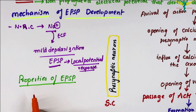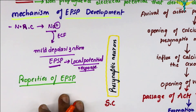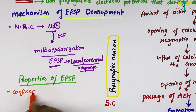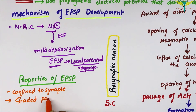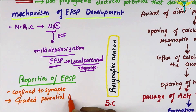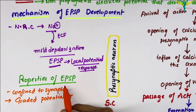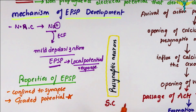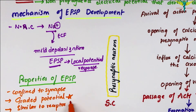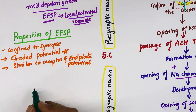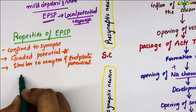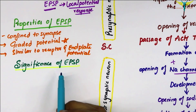The properties of the EPSP are as follows: the EPSP is only confined to the synapse, it is a graded potential — remember this point — and it is similar to the receptor potential and the end-plate potential.